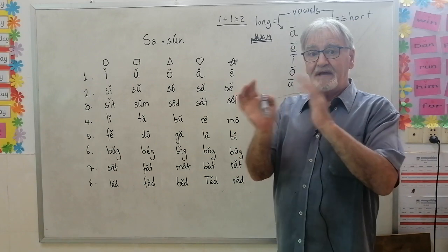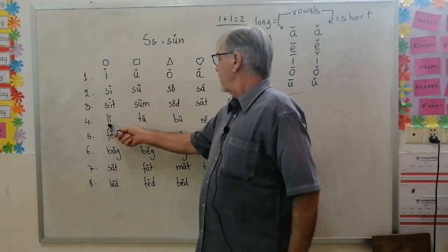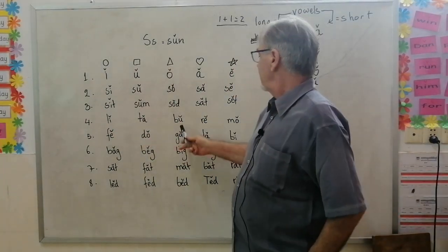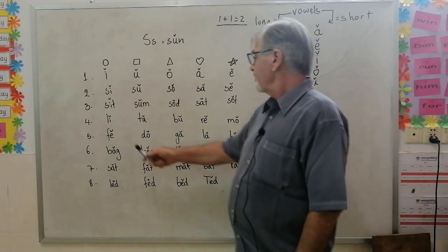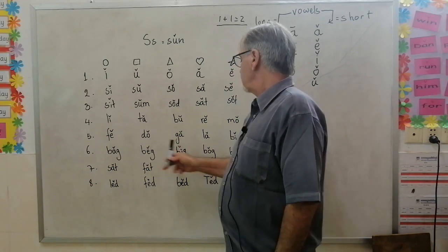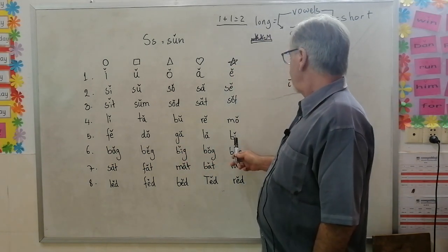Number four: lip, tan, but, red, mo. Five: fair, dog, galah, big.